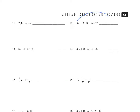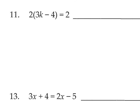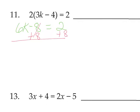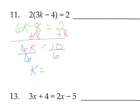On number 11, we need to simplify first because we have parentheses. Distribute the 2: 2 times 3k is 6k, 2 times negative 4 is negative 8. There are no like terms — we have a variable term and a constant term. To get rid of negative 8, use plus 8. We have 6k equals 10. Divide by the coefficient 6 — they're both divisible by 2, so k equals 5 thirds.